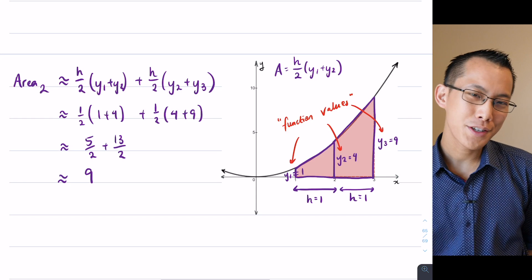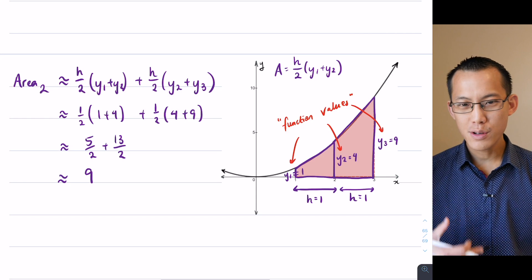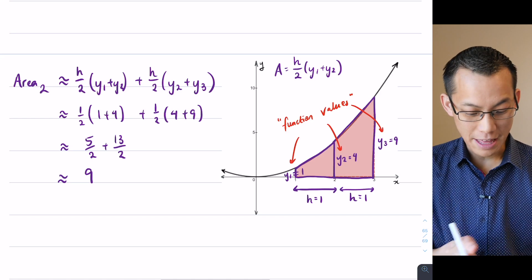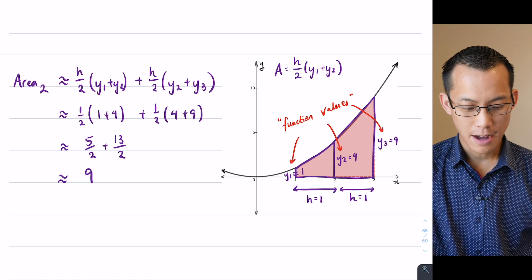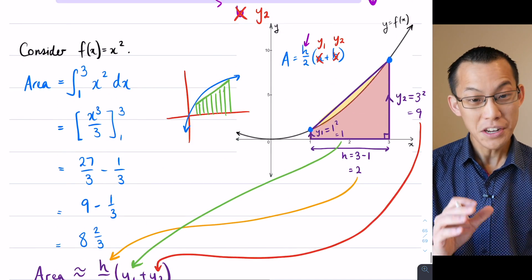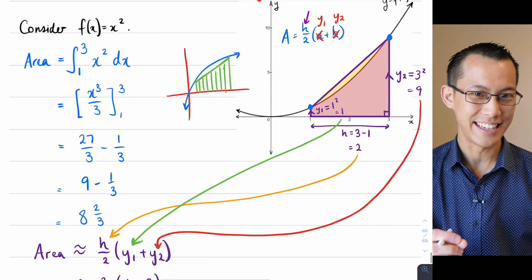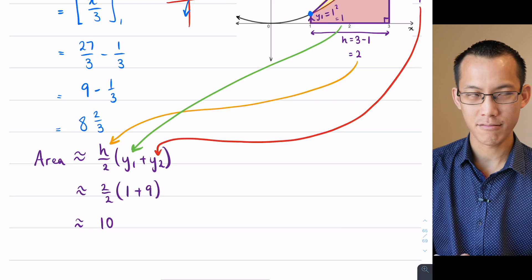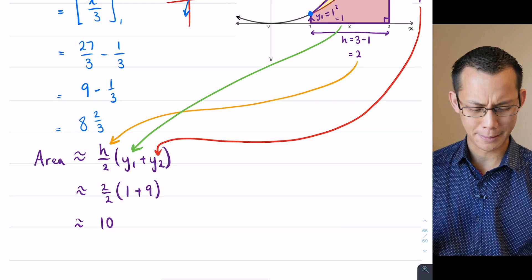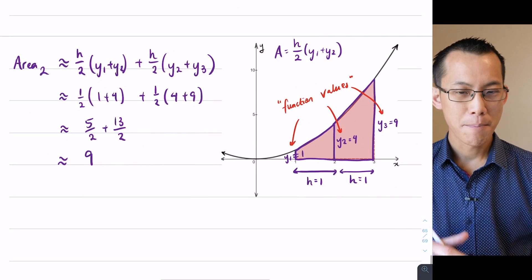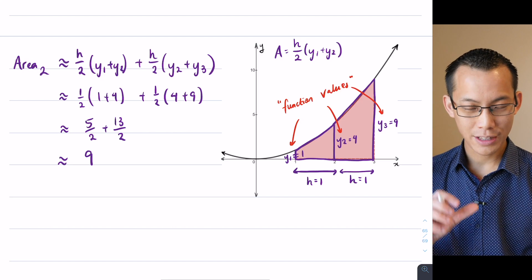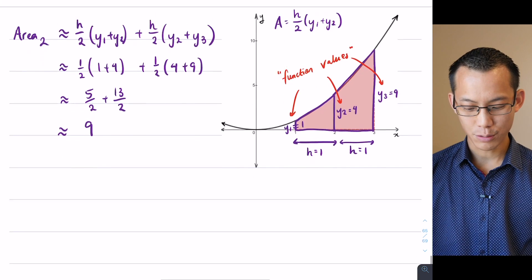Okay, so what have we just seen? Well, by using more trapeziums, I can get a more accurate result, and this is much closer, right? Think back to our original integral. We know the area is exactly eight and two-thirds. We tried this first way with one trapezium, we got 10. I mean, at least we're in the right ballpark, but we could do better, and we did. By putting in more trapeziums, we got a more accurate result. We're only within one-third of the actual area.